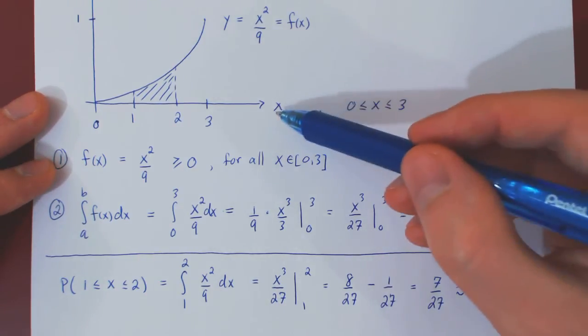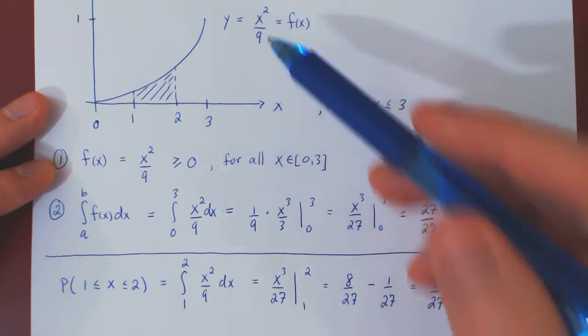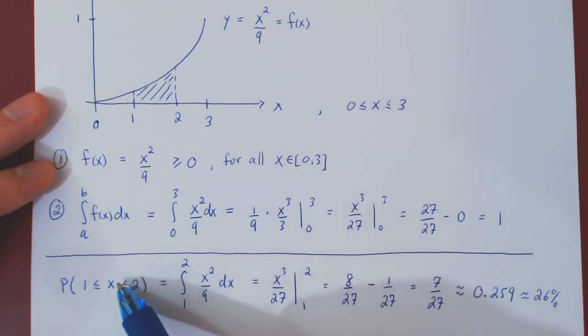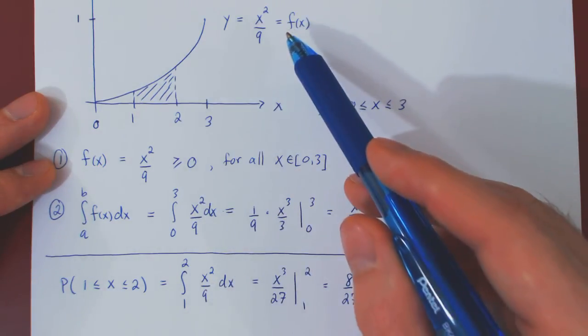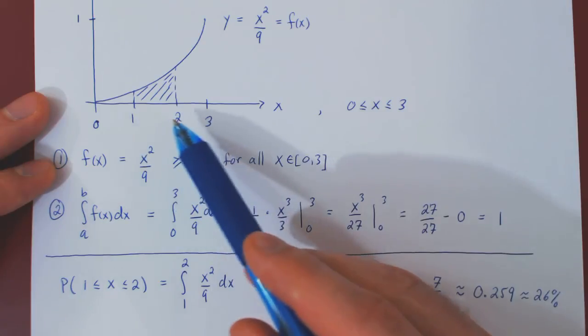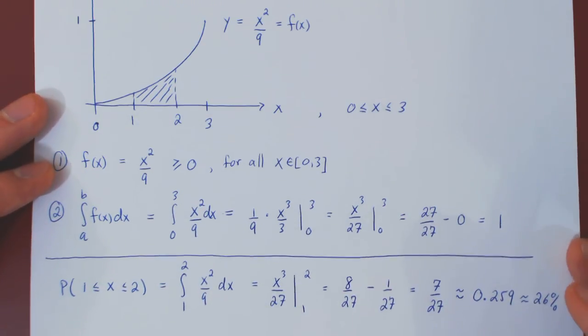So, given the random variable x with its corresponding density function, x squared over 9, the probability that x lies somewhere between 1 and 2 is about 26%. Of course, geometrically, this is nothing but the area below the probability density function over the given range of x values. And that's it.